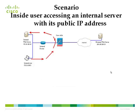Scenario 2: An inside user accessing an internal server using its public IP address. In this scenario, 172.16.100.0 is the internal network and 209.165.200.0 is the outside network of the ASA. A web server in the internal network at 172.16.100.0 can be accessed by outside users using the translated IP address 209.165.200.0. Inside users want to access this web server using the translated address, with traffic sourcing from the inside interface and being routed back to the inside interface.